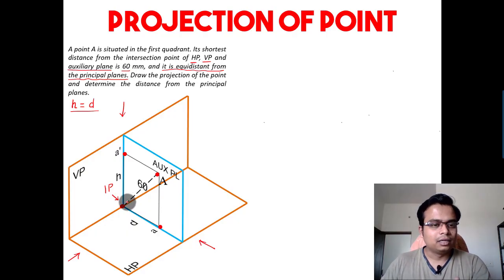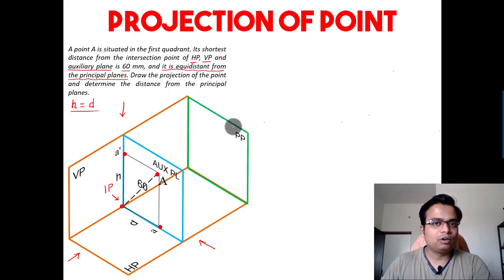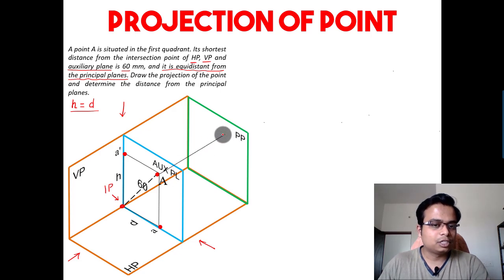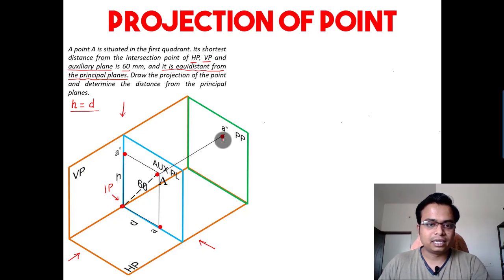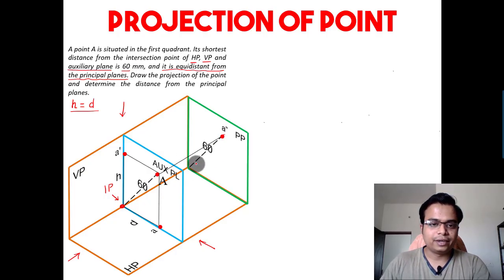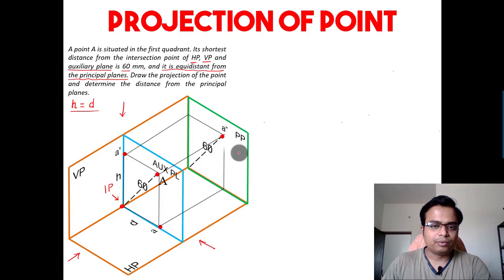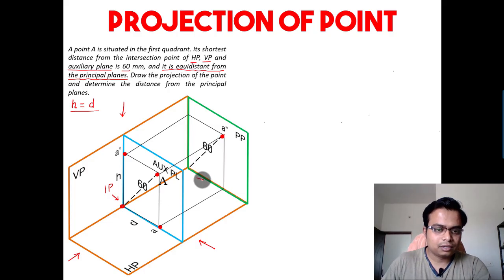To see this line clearly and thoroughly, we need to look from the left-hand side, and for achieving the left-hand side view we need a profile plane. So let's have the side view. The point right here is the side view — a double dash (a''). This 60 millimeter distance will be clearly seen over here. Let me connect the front view with the side view, and the top view with the side view.